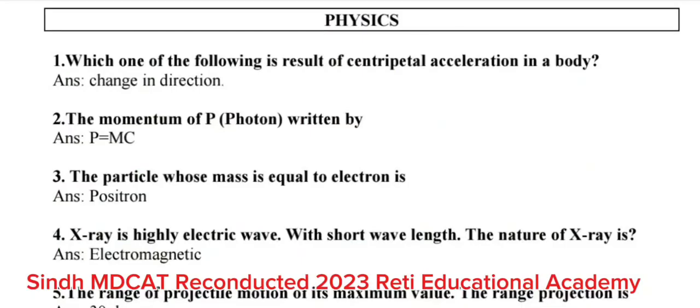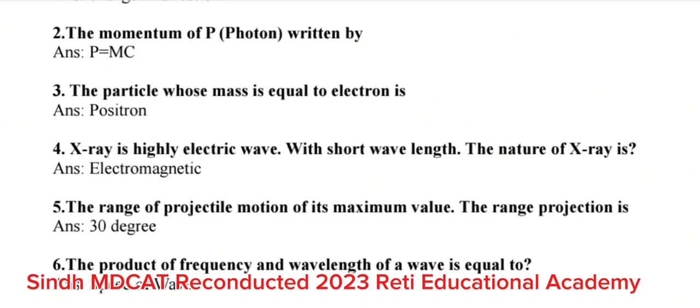Questions from Physics. Question number 1: Which one of the following is result of centripetal acceleration in a body? The correct answer is change in direction. Question number 2: The momentum of P photon written by? The correct answer is P is equal to MC. Question number 3: The particle whose mass is equal to electron is positron. Question number 4: X-ray is highly electric wave with short wavelength. The nature of X-ray is? The correct answer is electromagnetic.